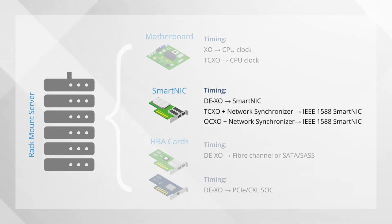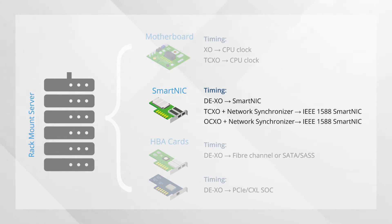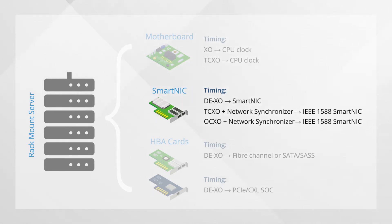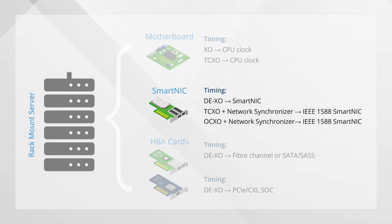The SmartNIC, which offloads some of the processing functions from the core CPU to make the server more efficient, will require either a low-jitter differential oscillator or a high-precision TCXO or OCXO, plus a network synchronizer, depending on the need to meet the IEEE 1588 protocol.